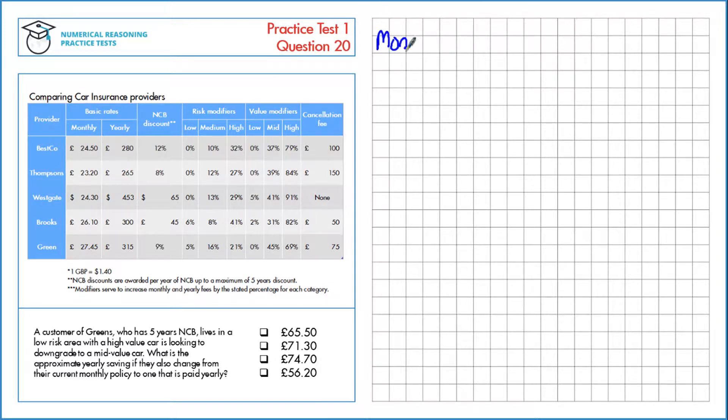Let's calculate the monthly policy but we've got to multiply that price by 12 so we can compare it to the yearly one later. So first we're on Green's and we're looking at the monthly policy for £27.45 multiplied by 12.